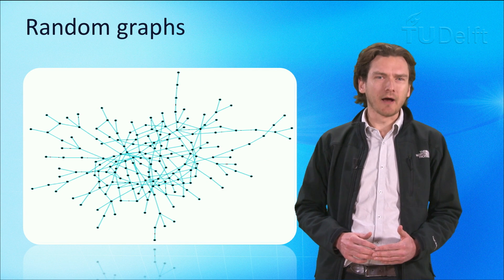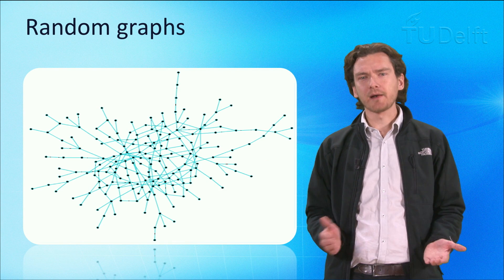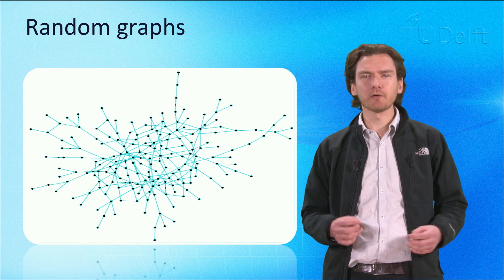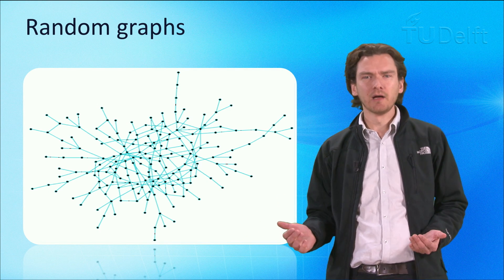First here we have what is called a random graph, where you have a set of nodes, and then start adding edges randomly between any two nodes until all the nodes in this set are connected. In other words, there is an equal probability that any two nodes will be connected.